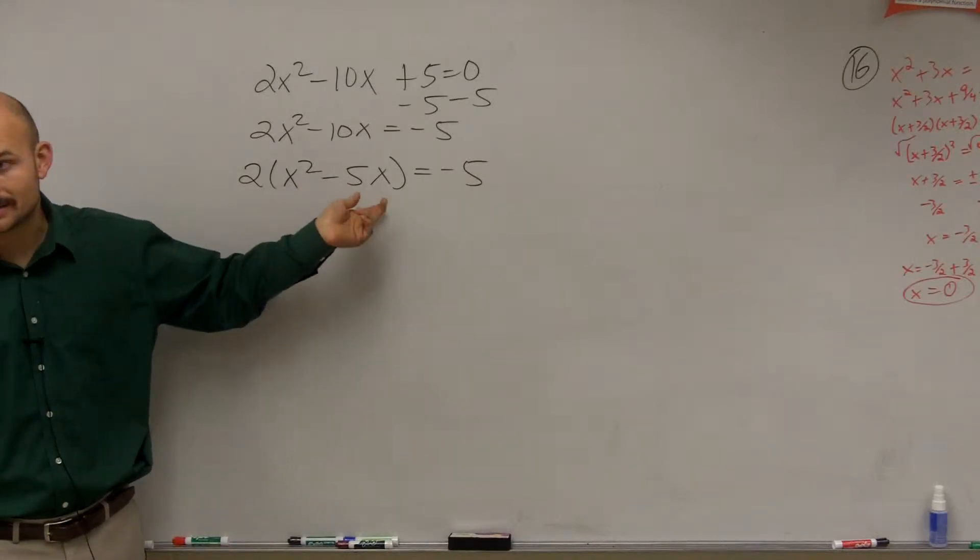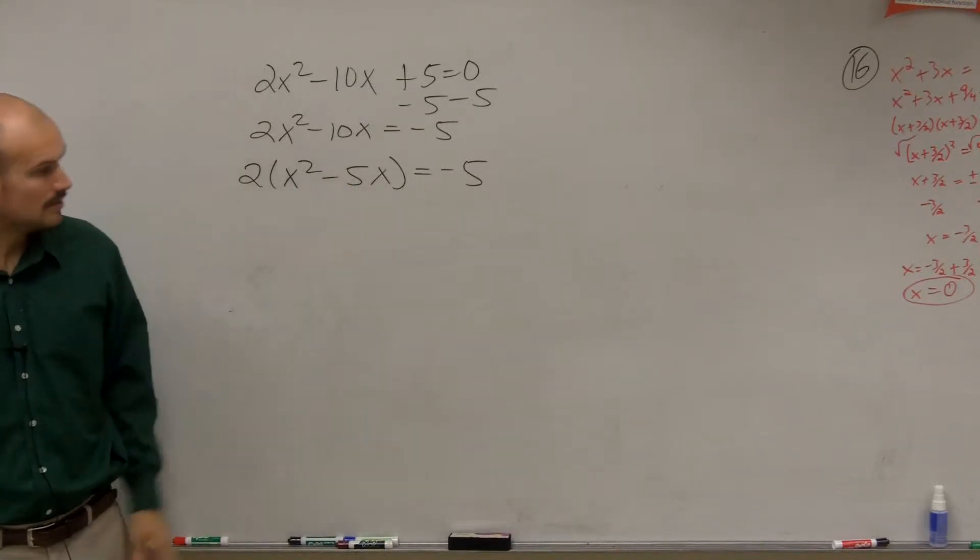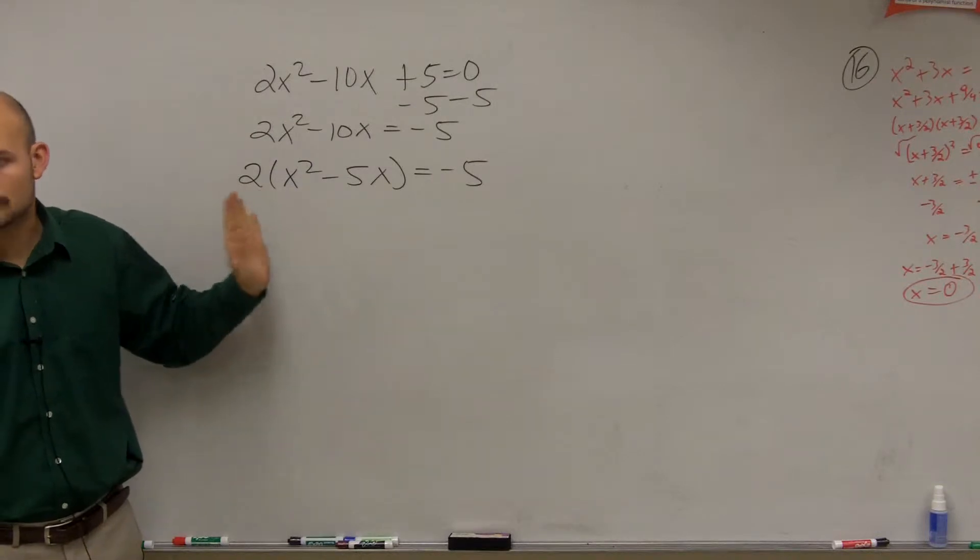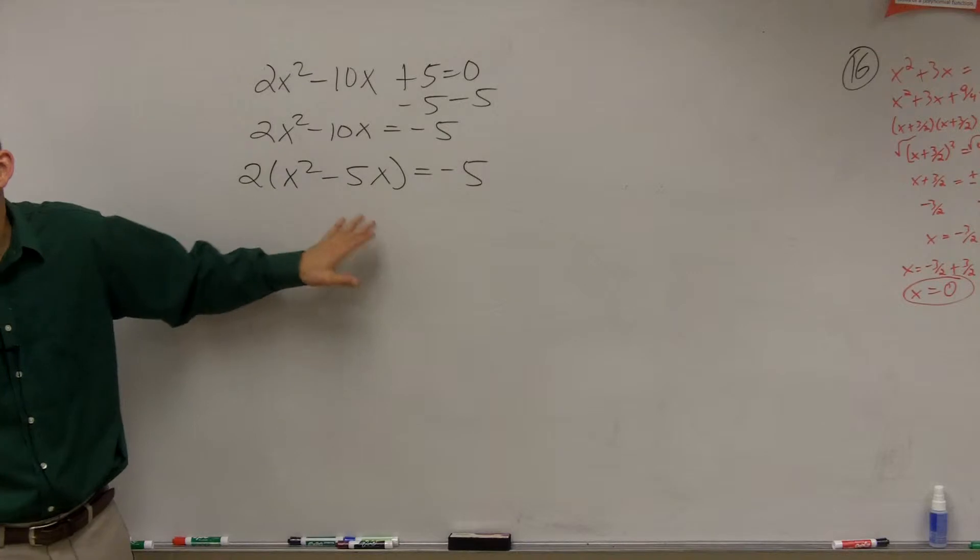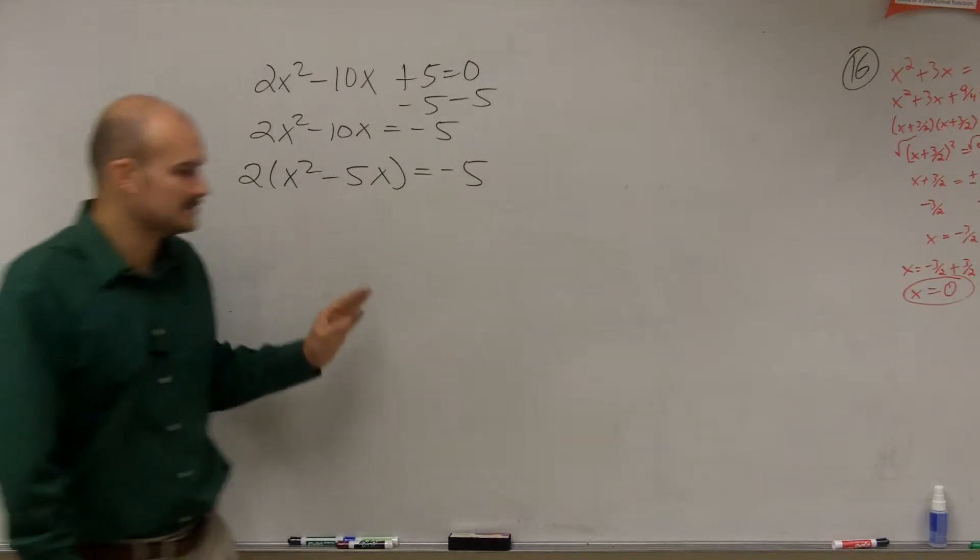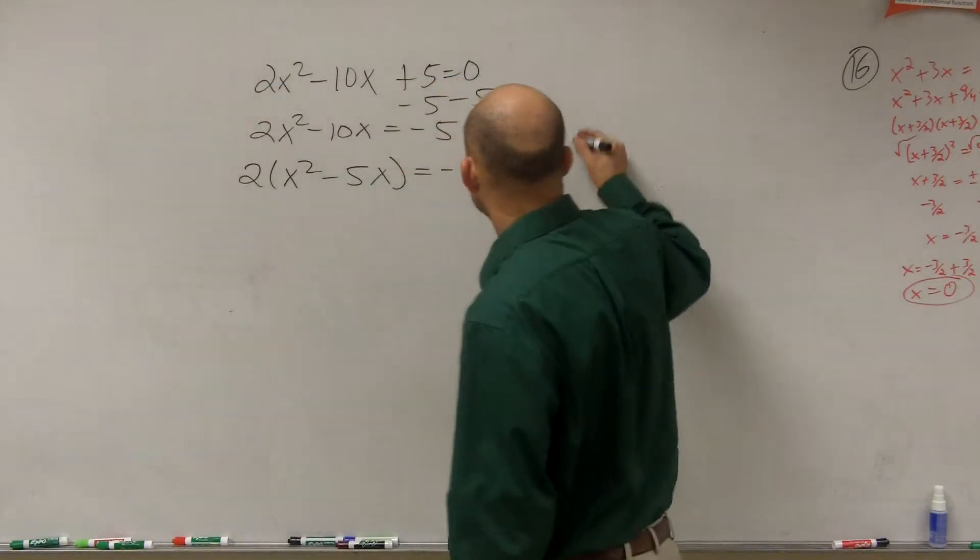Because now I have x squared minus 5x. It's still there on the outside. But you'll see how the 2 is still going to be a part of our problem. But for completing the square, we're going to use it. So let's take a look at what's going to happen.